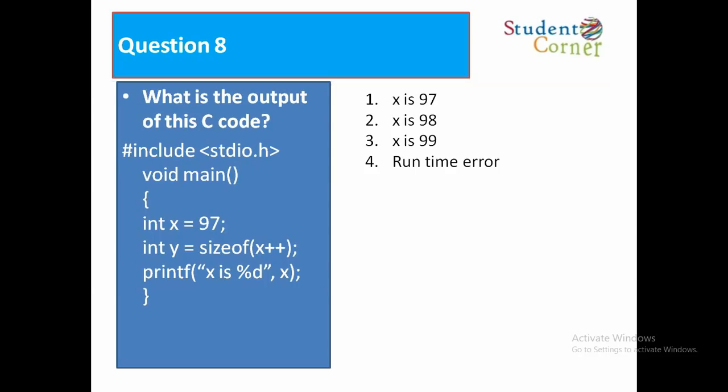Question 8: What is the output of this C code? #include <stdio.h>, void main(), int x = 97; int y = sizeof(x++); printf("%d", x); Option 1: x is 97. Option 2: x is 98. Option 3: x is 99. Option 4: Runtime error.